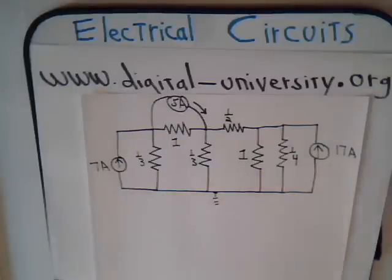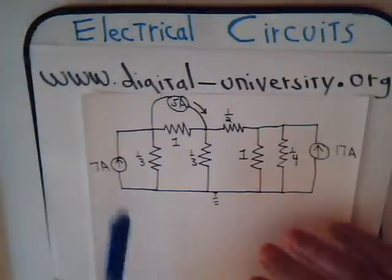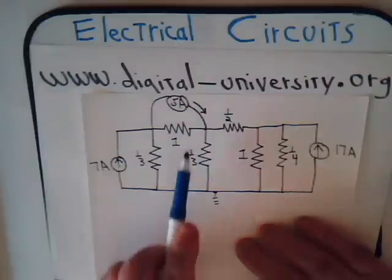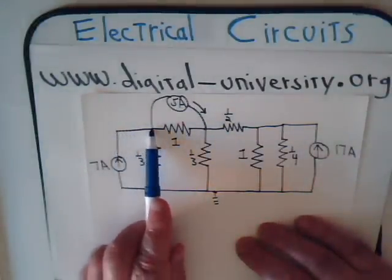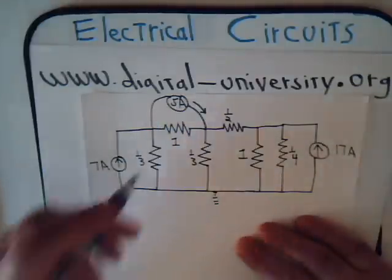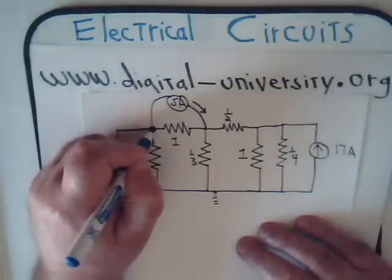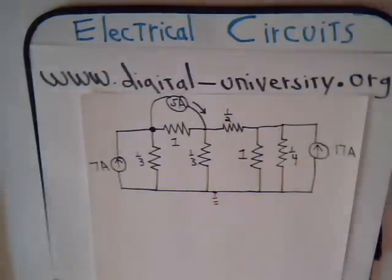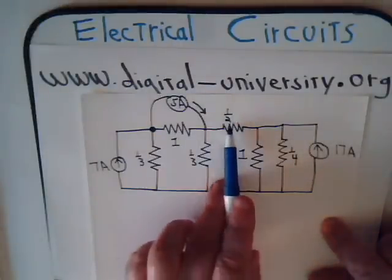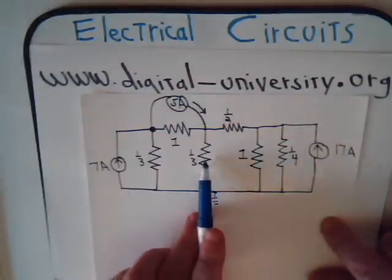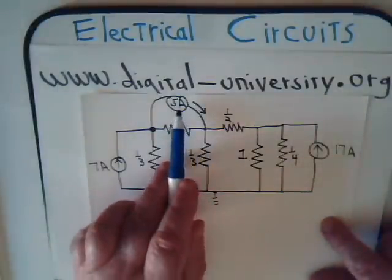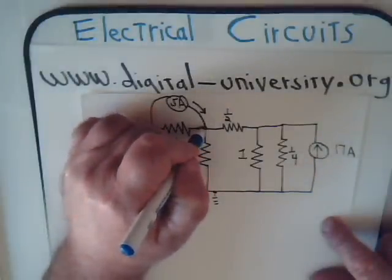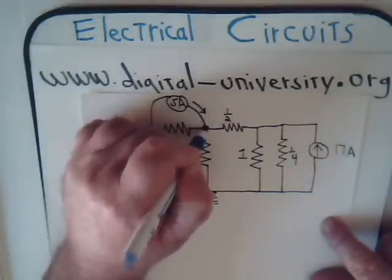That bottom node is grounded — so here is ground. Up here we have a node where the branch from this resistor, this resistor, the branch of the current supply, and this current supply all meet. So there is one node in the upper part of the circuit.